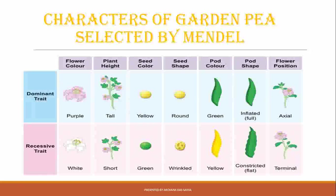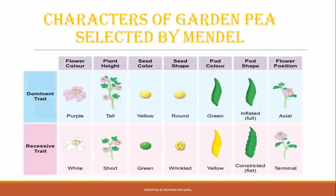Mono means single — when he took one character at a time, those are called monohybrid experiments. When he took two characters at a time, those were called dihybrid experiments. These are the experiments and the laws following them, which we will learn in our next class. Today we are not going into the experiments — we will do it the next day.